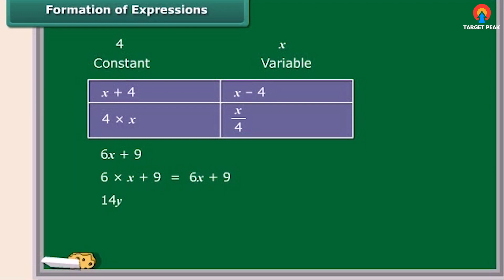Similarly, 14Y minus 30 is obtained by first multiplying Y by 14 and then subtracting 30 from the product. So, children, you see these expressions were obtained by combining variables with constants. You can also obtain expressions by combining variables with themselves or with other variables.